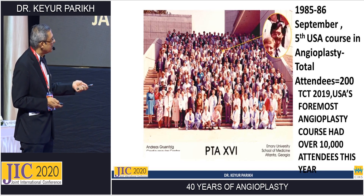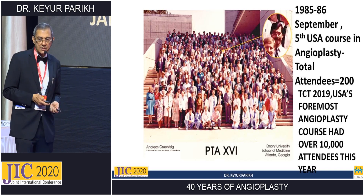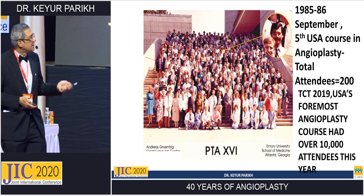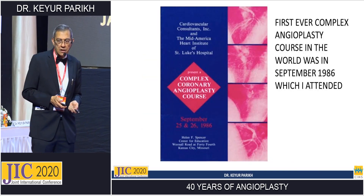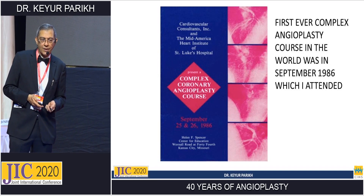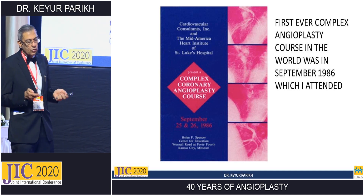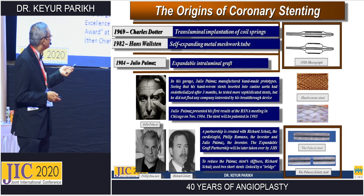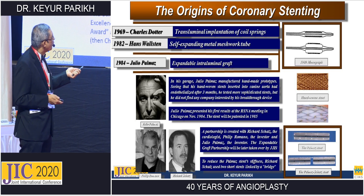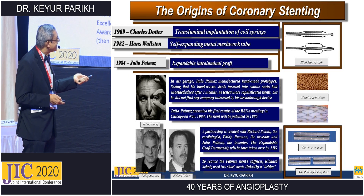This year, at TCT 2019 — the US's foremost course — there were 10,000 attendees plus. You can imagine how these were truly pioneering years. That same year, Jeffrey Hartzler started doing acute MI angioplasty; I attended a recorded case conference in 1986. The origin of all this started with Charles Dotter in 1964, followed by Hans Wallsten with his expanding stents, and Julio Palmaz, who started developing his stent in his garage.